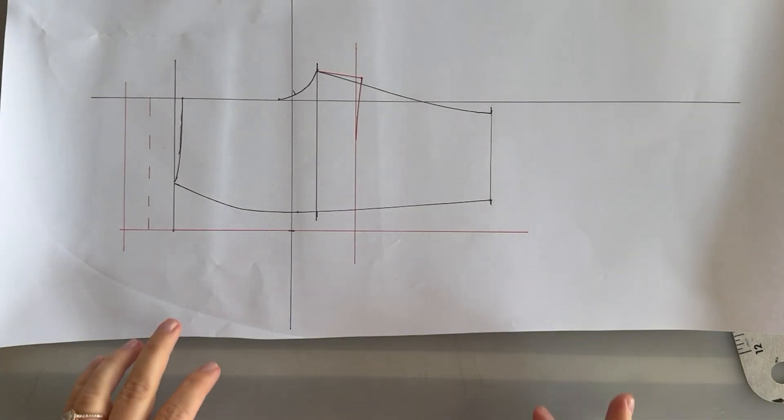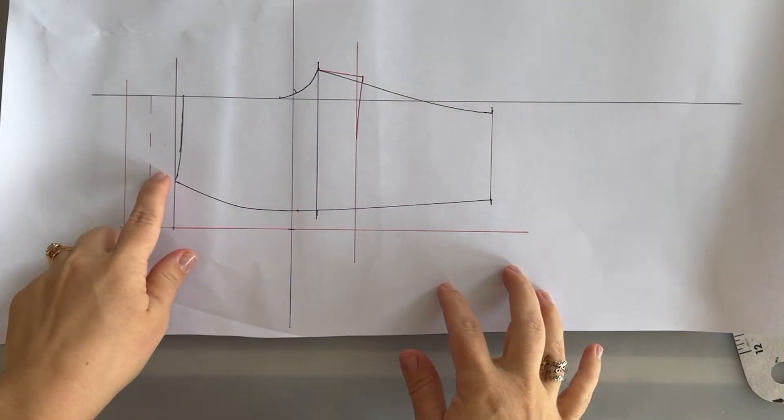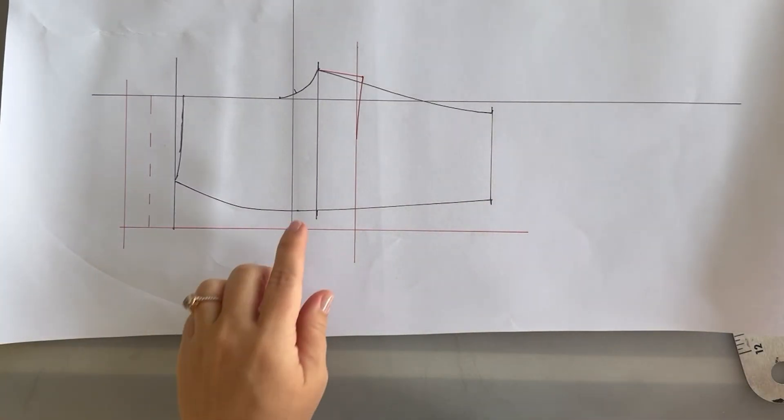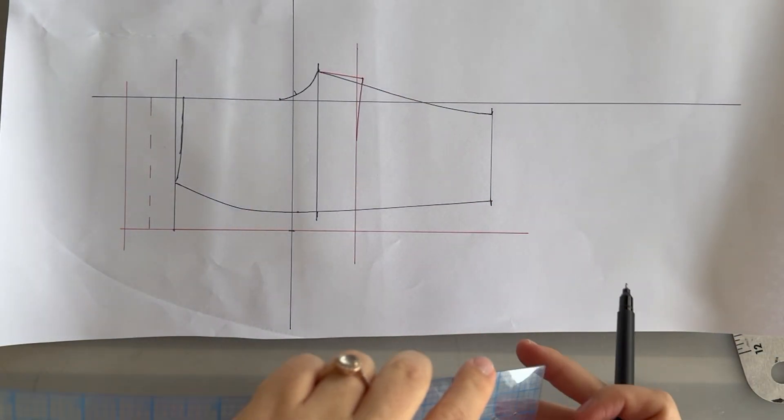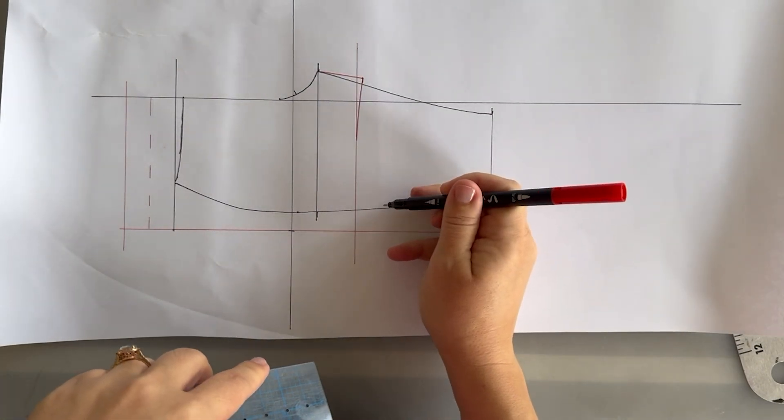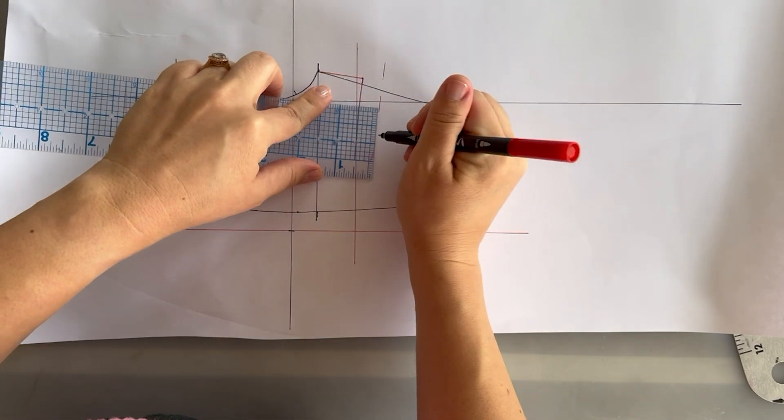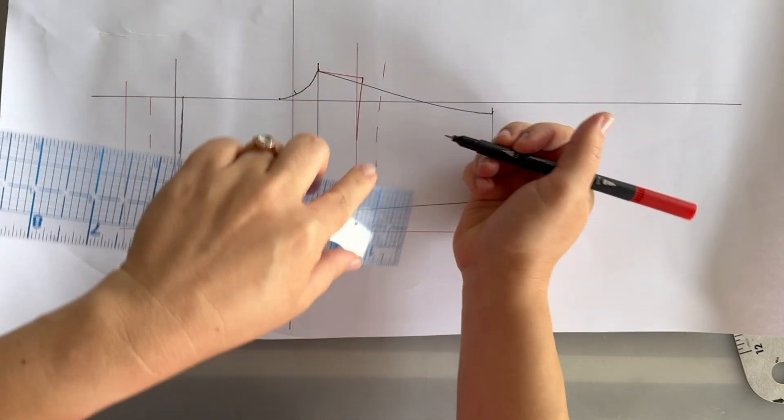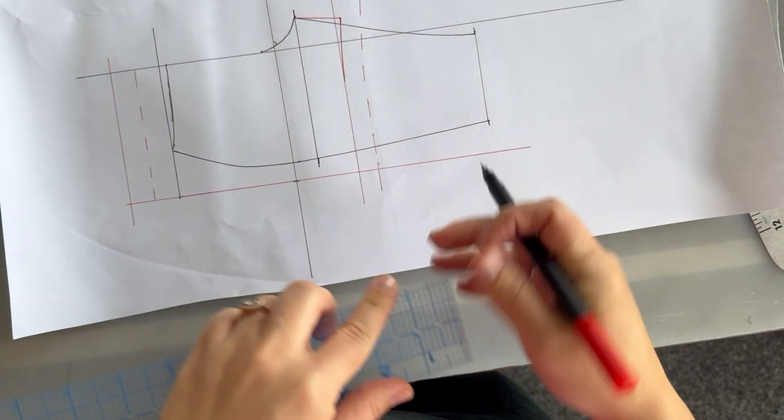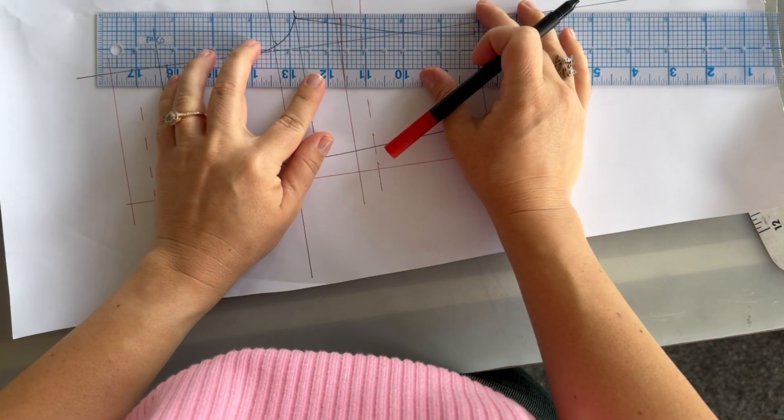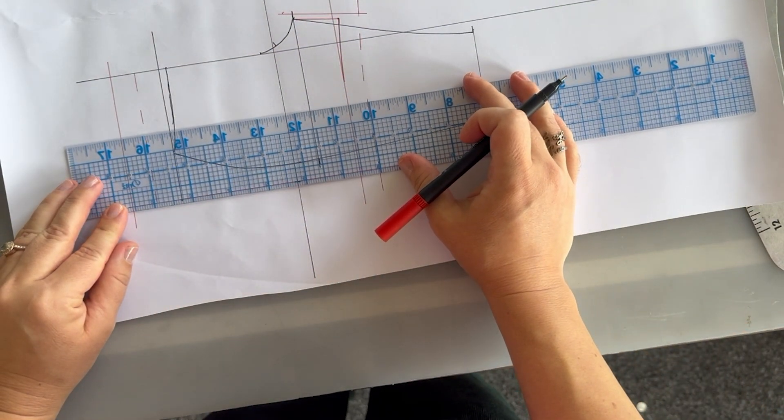And then at this point, all we need to do is add seam allowances everywhere. So our casing here at the top is our seam allowance for our elastic. So we don't need to add anything at the waist, but we will add a quarter inch seam allowance at our crotch, inseam, side seam. Quarter inch full scale, so eighth of an inch, half scale. And then we need to add our one inch hem depth. So again, half scale would be half an inch. So I'm going to follow the curve of my hem. Add my seam allowance around the rest of my piece.